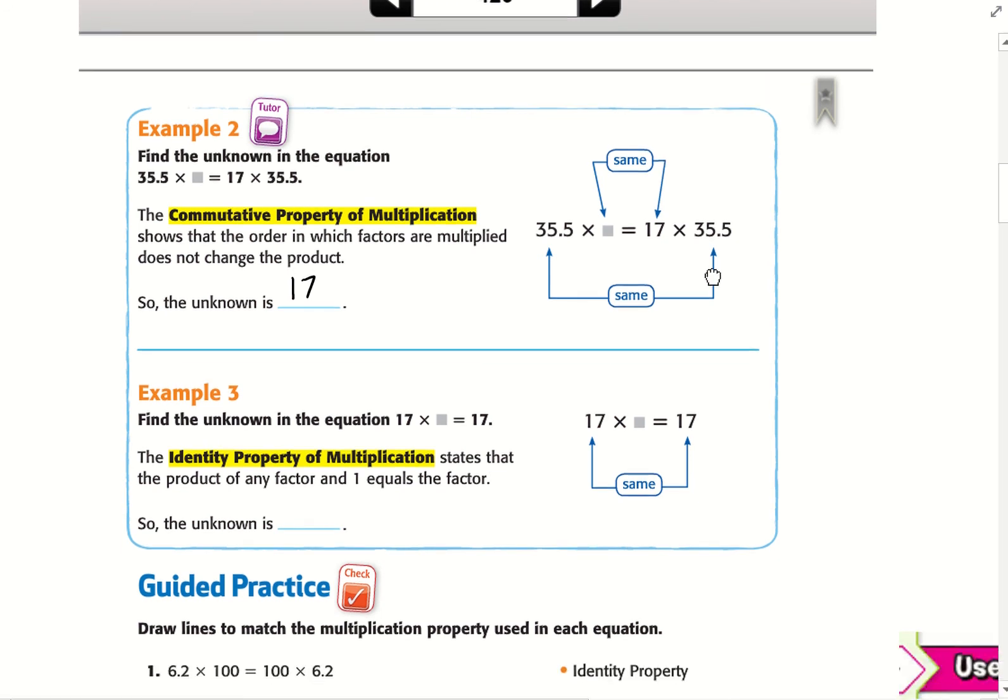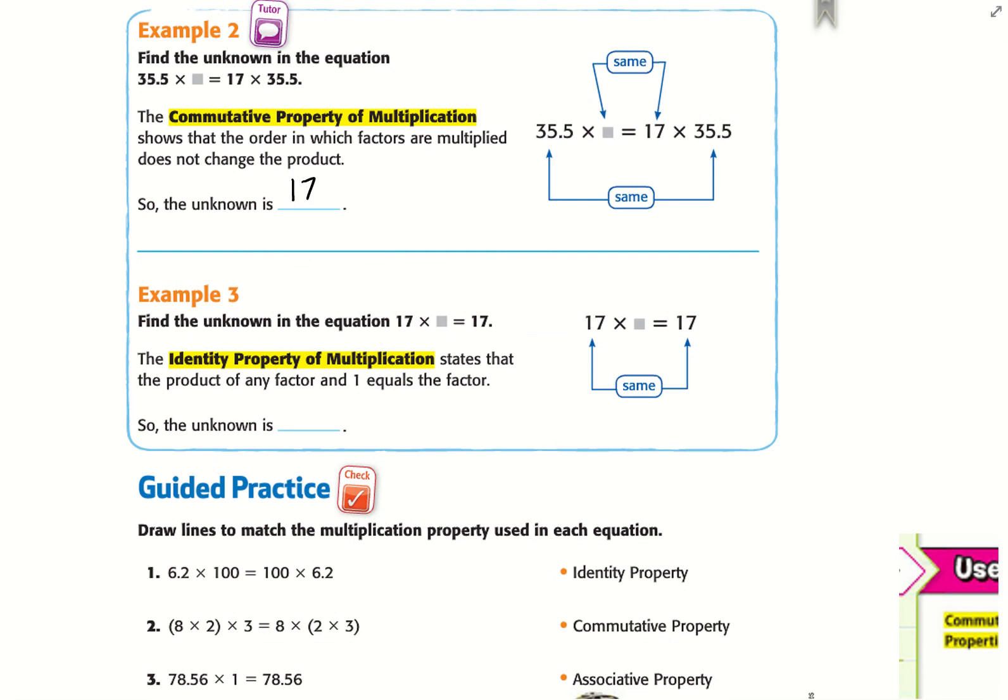Example 3: Find the unknown in the equation 17 × ___ = 17. The Identity Property of Multiplication states that the product of any factor and 1 equals the factor. So we have 17 × 1 = 17, and that's the Identity Property.